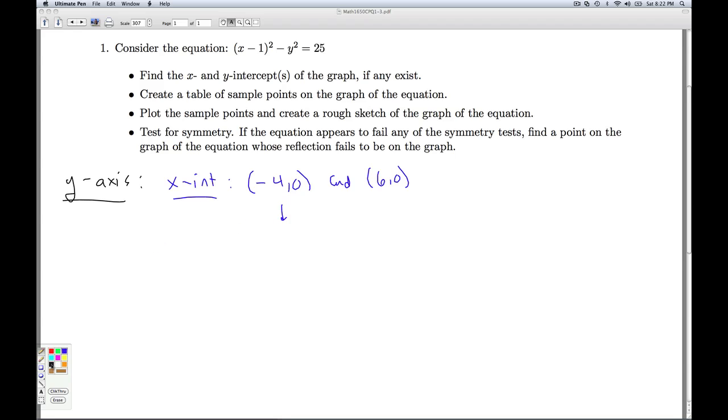So we could say since the point negative four zero is on the graph, but its reflection across the y-axis, namely four zero is not, the graph is not symmetric about the y-axis.